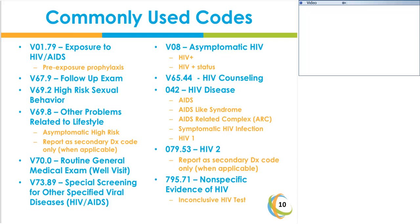V70.0 is used for instances when a patient is not sick, has no medical complaints, but is coming in for a well visit. There may be instances during an HIV/AIDS exam where the physician may decide to perform a well visit. V73.89 is a special screening code, used when performing an HIV and AIDS screening test. V08 is asymptomatic HIV — also synonymous with HIV positive and HIV positive status. This code is used when the documentation states asymptomatic HIV, HIV positive, or HIV positive status.